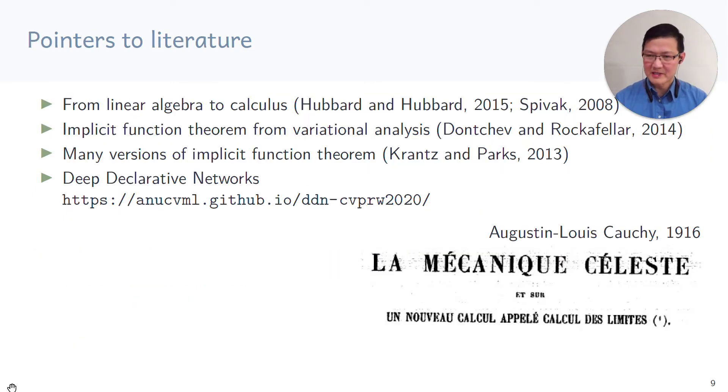Before we go on to an example, I'd like to point you to some literature. There's a couple of textbooks up there that takes you all the way from linear algebra to calculus. The implicit function theorem was already discovered by Cauchy in 1916 in this French paper there. The modern instantiation of the implicit function theorem was actually proven by Dini for real values, finite dimensional real values. And this is explained from a view of variational analysis from the textbook there. And as I said already, there are many different versions depending on the exact topology.